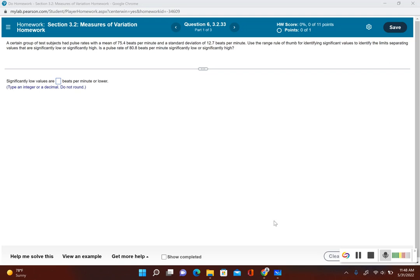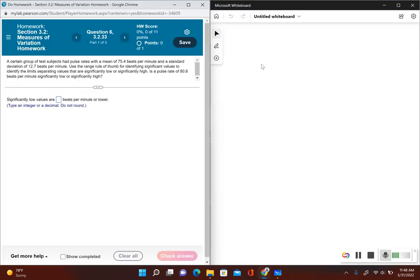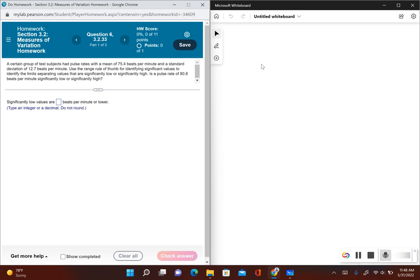Using the range rule of thumb, we do have a formula. Unfortunately, we cannot use StatCrunch to work it out, so we have to do this by hand. To identify significantly low values, we're going to take the mean and subtract 2 times the standard deviation.